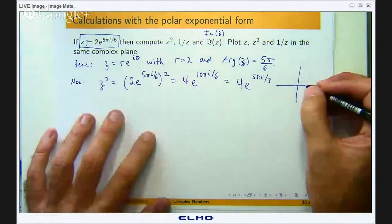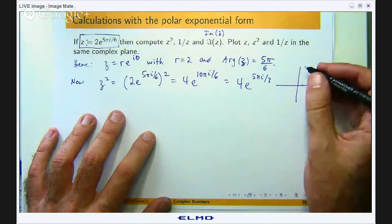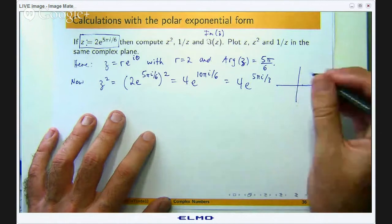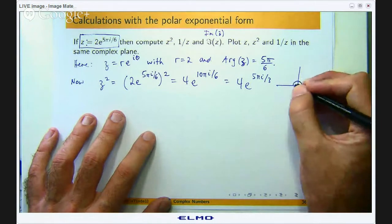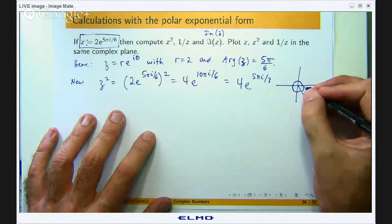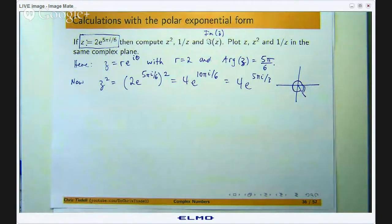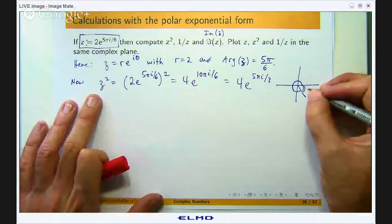So if I go around from the origin from the positive real axis if I rotate 5π/3 radians in the anticlockwise direction it will take me over here.